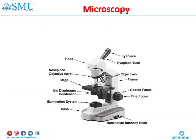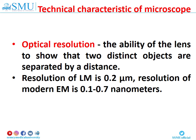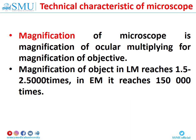Microscopy: the main method of study of biological micro-objects is microscopy. There are light microscopy and electron microscopy. Technical characteristics of a microscope include optical resolution and magnification. Optical resolution is the ability of the lens to show that two distinct objects are separated by a distance. Resolution of the light microscope is 0.2 micrometers. Resolution of the modern electron microscope can reach 0.7 nanometers. Magnification of a microscope is the magnification of the ocular multiplied by the magnification of the objective. Magnification in light microscopy reaches 0.5 to 2.5 thousand times, and in electron microscopy it reaches 150,000 times.